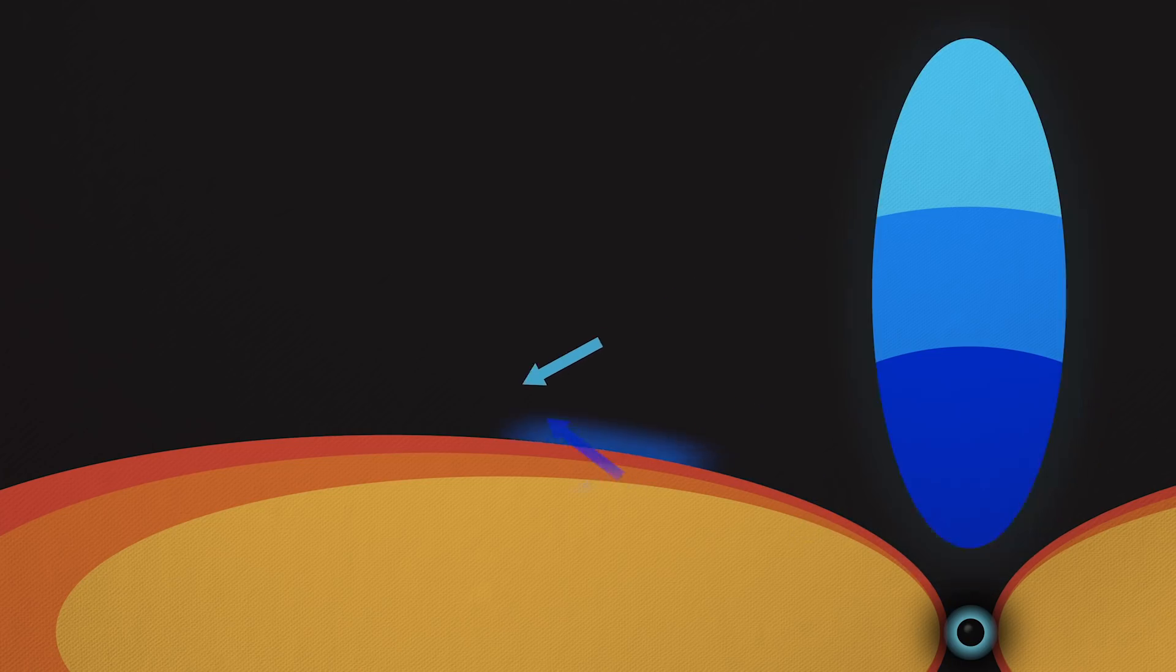Waves of X-rays from the corona echo off the accretion disk like the sonar we use to explore the ocean floor. These echoes tell us about the size and shape of the disk and corona.